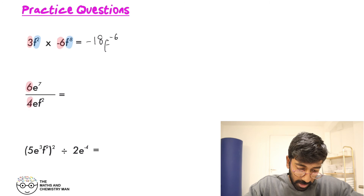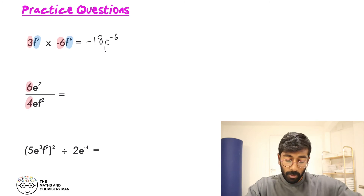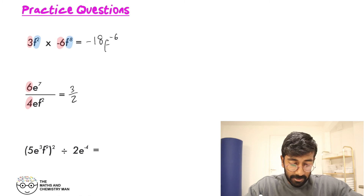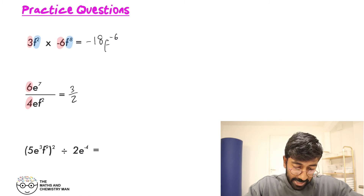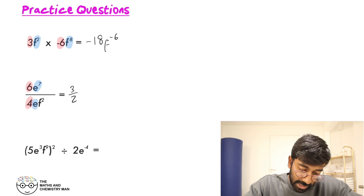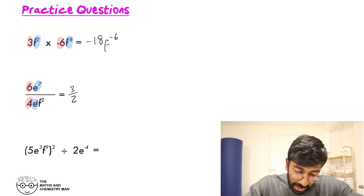Next one: 6 in the numerator, 4 in the denominator — 6 divided by 4, simplify — that's 3 over 2. Then let's deal with the E: E to the 7 on top and just E on the bottom, which is E to the power of 1. We're dividing, so take the powers away: E to the power of 6.